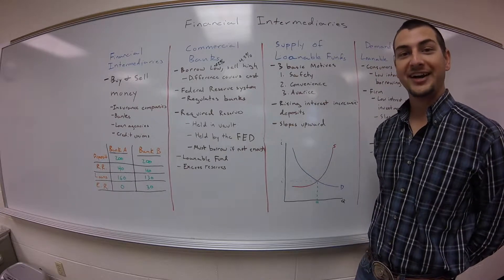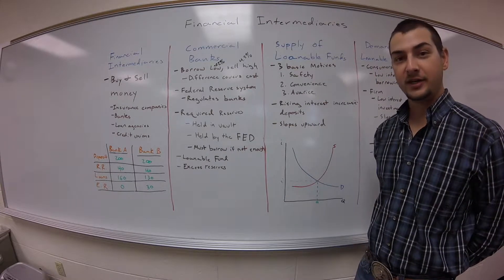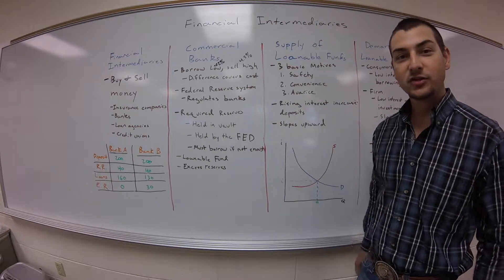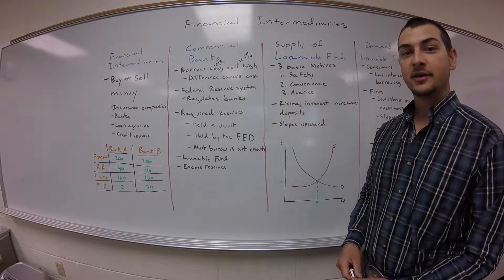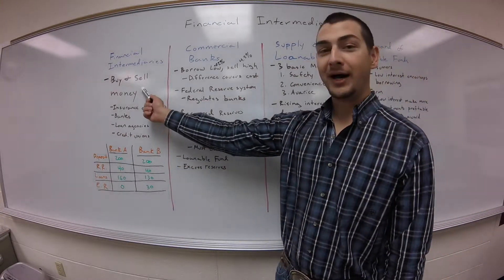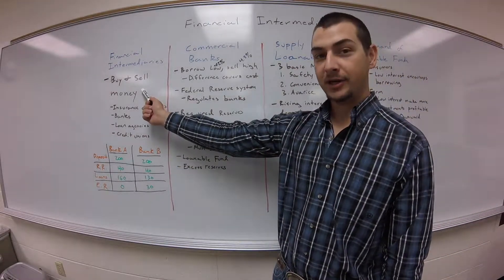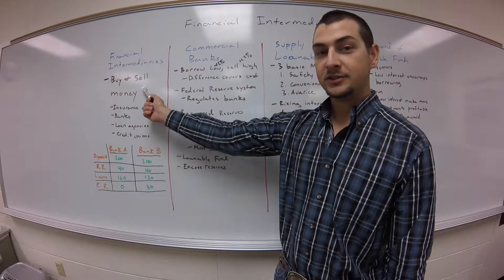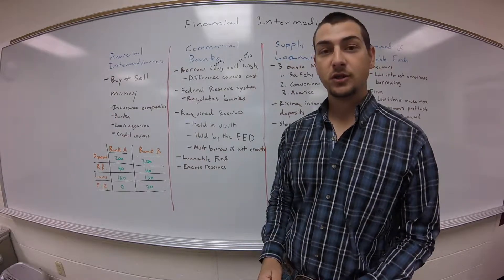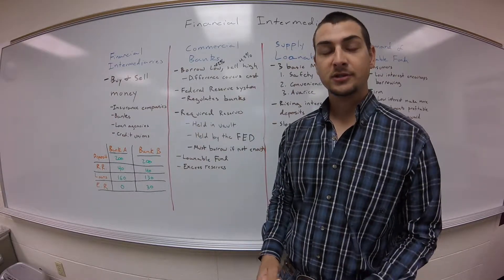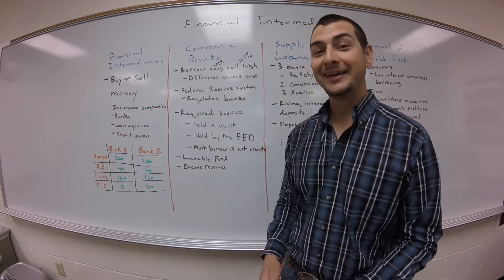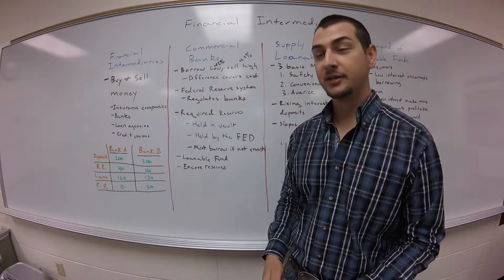In this video we're going to talk about financial intermediaries. What are financial intermediaries? Financial intermediaries are those people who buy and sell money. Just like any commodity, money can be bought and sold. So who are the players that are involved in the buying and selling of money?